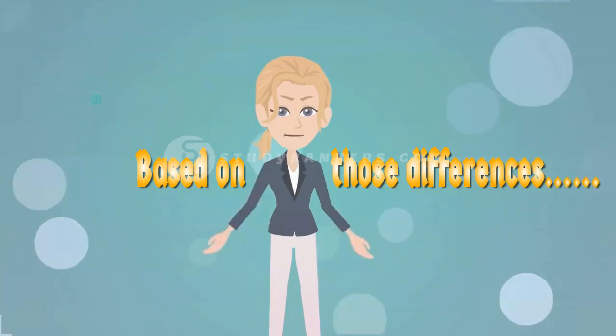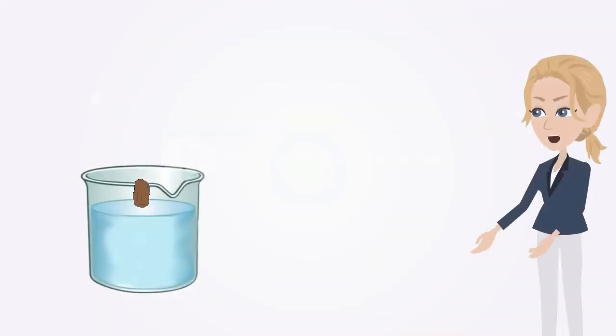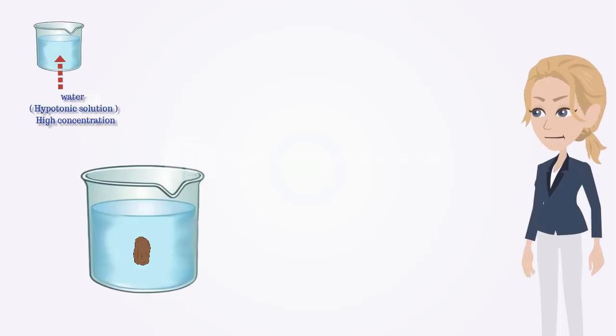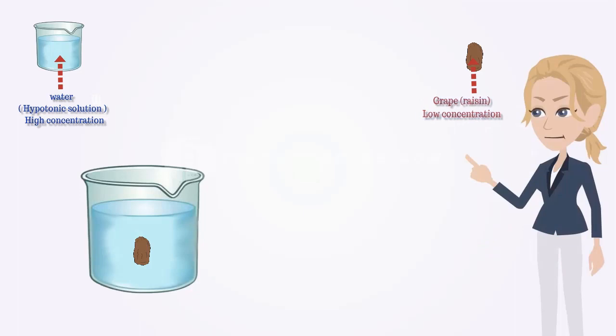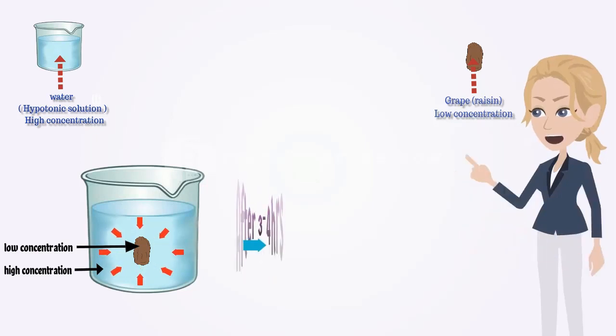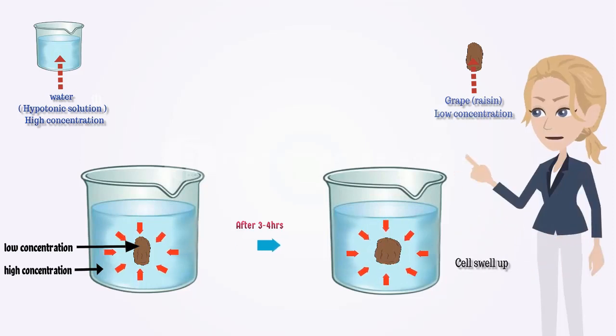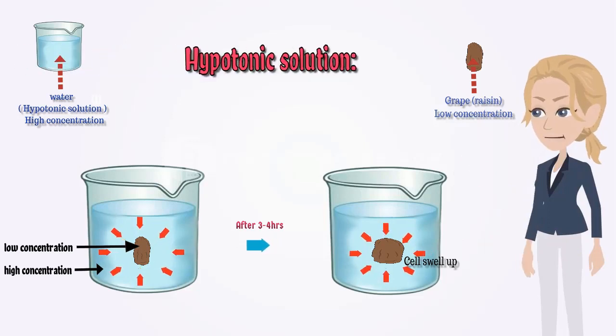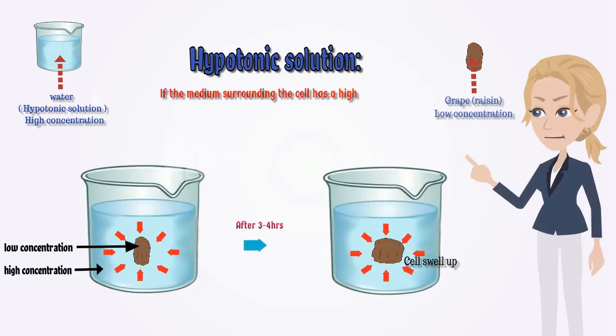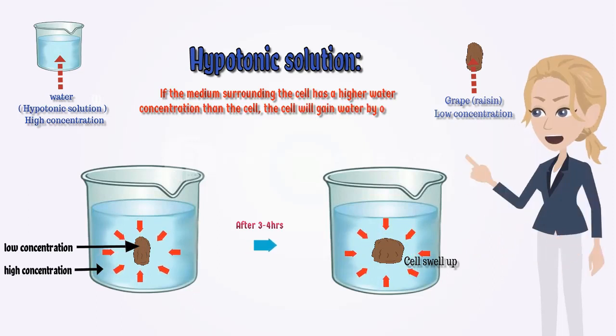As you all see the differences, based on those differences we can say that when the raisin is placed in water, which is a hypotonic solution, water will move down the concentration gradient from high concentration to low concentration. The overall result is that water enters the cell and the cell is likely to swell up. From this we came with the concept of hypotonic solution. If the medium surrounding the cell has a higher water concentration than the cell, the cell will gain water by osmosis. Such a solution is known as a hypotonic solution.